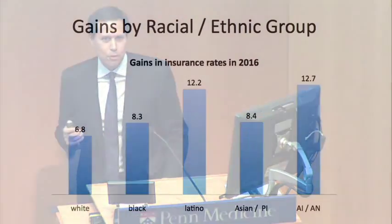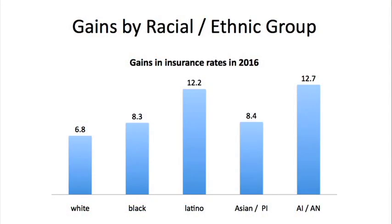Let's look at who gained by how much. The percentage point gain for whites was 6.8 percentage points. Blacks gained more, and Latinos gained a whopping 12.2 percentage points. So we get greater gains for racial and ethnic minority groups.